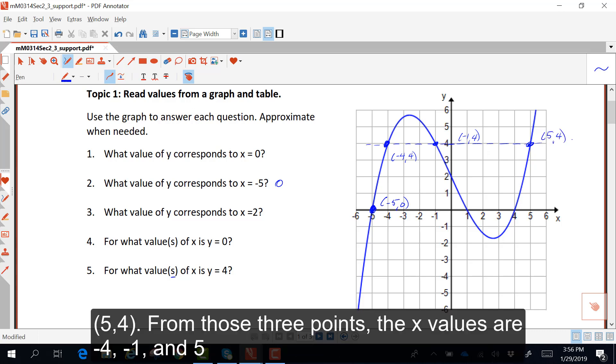From those three points, the x values are negative 4, negative 1, and 5.